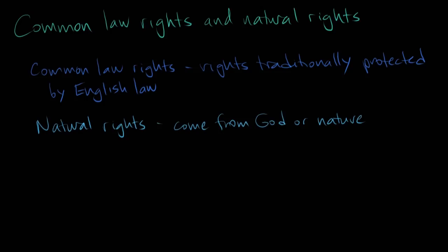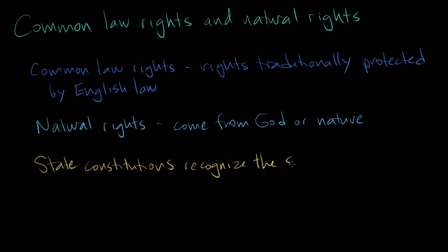The best way to figure out which rights were natural: go to the Interactive Constitution, click down, and look at the Virginia Declaration of Rights, the Massachusetts Constitution of 1780, the New Hampshire Constitution, which has a beautiful preamble about what a natural right is. You'll see that all of these state constitutions are recognizing the same natural rights over and over again.